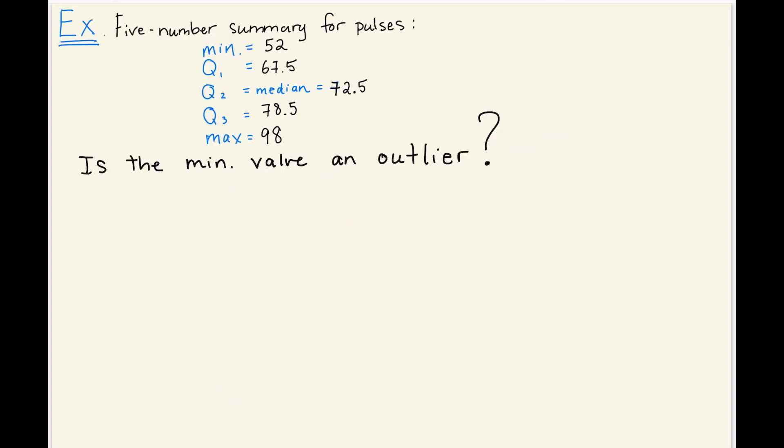There are a couple other questions I want to show you how to answer. The first question, if you recall the five number summary for the pulses was given by these five numbers. And one question we might want to ask is, is the minimum value, which is the 52, an outlier? In other words, does it qualify as an extreme value? Like a value that is very far from the other values? So we do have a way to measure whether or not a value is extreme or is an outlier. And I'm going to show you how to do that.